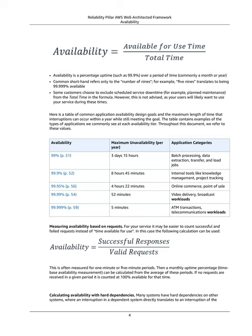Here is a table of common application availability design goals and the maximum length of time that interruptions can occur within a year while still meeting the goal. The table contains examples of the types of applications we commonly see at each availability tier. Measuring availability based on requests: For your service it may be easier to count successful and failed requests instead of time available for use. In this case a calculation can be used, often measured for one-minute or five-minute periods. Then a monthly uptime percentage can be calculated from the average of these periods. If no requests are received in a given period it is counted at 100% available for that time.